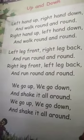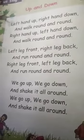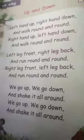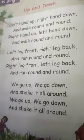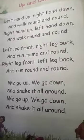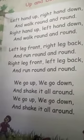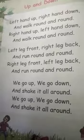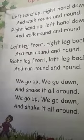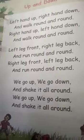Children, do your accents — left hand up, right hand down, and walk round and round. Right hand up, left hand down, and walk round and round. Next: take your left leg to the front side, right leg to the back side. Left leg front, right leg back, and run round and round.